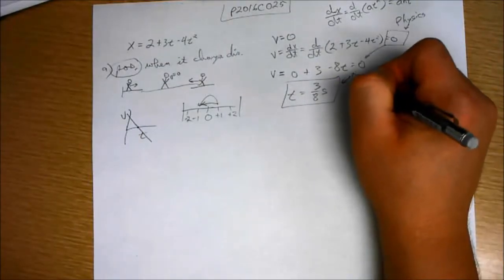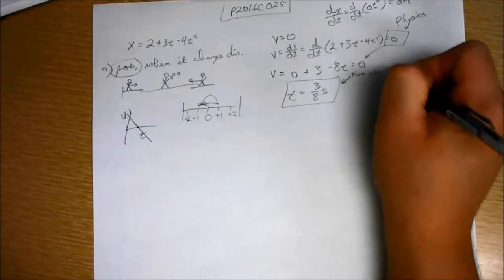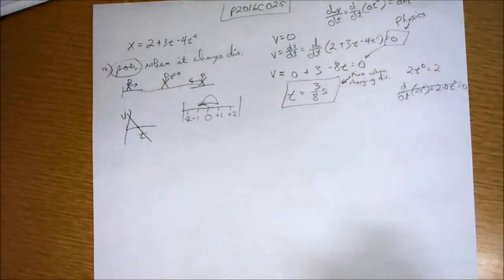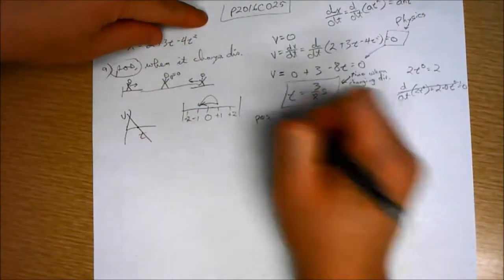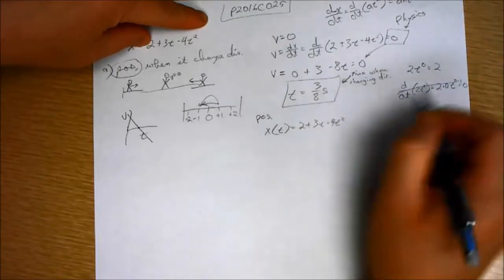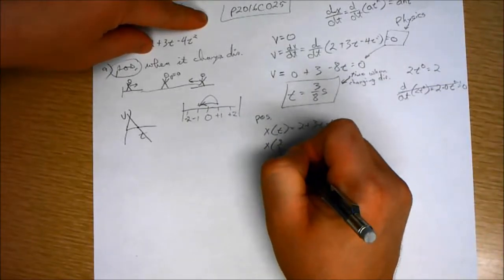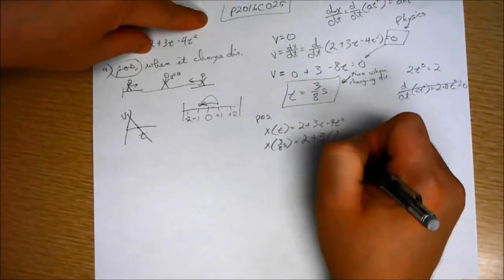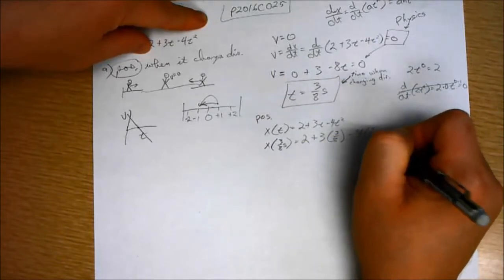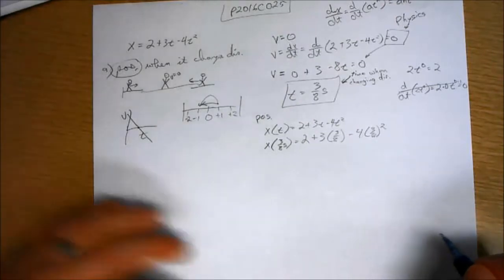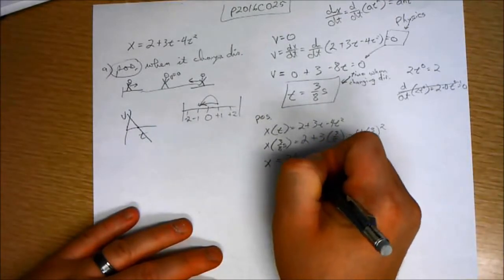So that is the time when changing direction. In order to find the position, we have to take x of t equals 2 plus 3t minus 4t squared and we have to find x of 3 eighths seconds. That's 2 plus 3 times 3 eighths minus 4 times 3 eighths squared. x then equals 2.56 meters.